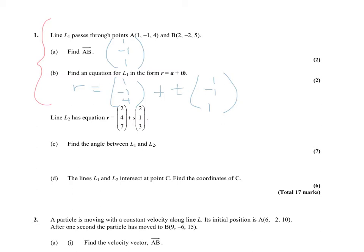Then it gives us the equation for L2, and it asks us to find the angle between L1 and L2. So when we're going to do that, we are looking at the angle between the direction of both lines. We don't care what point is on those lines. We care about what direction they are. That's what's going to tell us the angle. So in order to come up with the angle, we are going to use this direction vector from this line and this direction vector from this line.